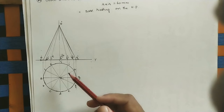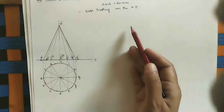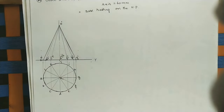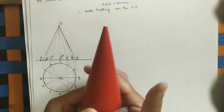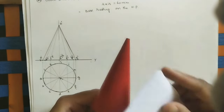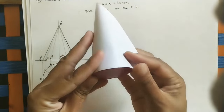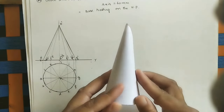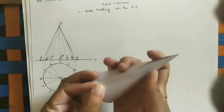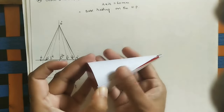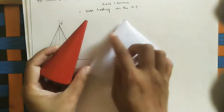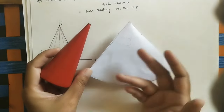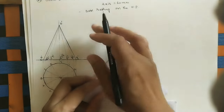This is the projection of the cone — this is the top view and this is the front view. Now we will do the development of the cone. Development of the surface means opening the entire surface as one flat sheet. I will take one sheet that covers the entire cone. When we develop this surface into one sheet, it is called the development of the cone.